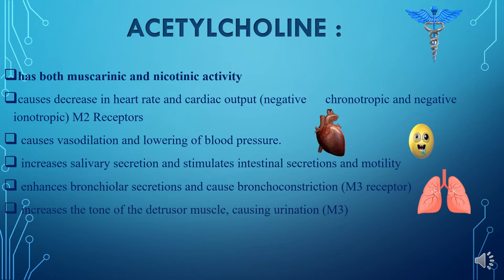Acetylcholine also increases the tone of the detrusor muscle, which lines the bladder, and causes urination. It can also cause miosis — constriction of the pupil — and thus can be used therapeutically in ophthalmic surgery.